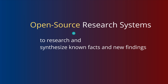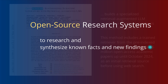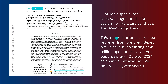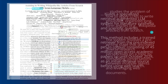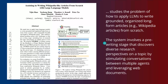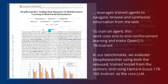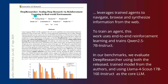You know we have open source research systems that do research and synthesize known facts and new findings. For example, here is OpenScholar — this is the paper — or if you go for another open source, this is Storm, or maybe you're familiar with Deep Researcher from April 2025.